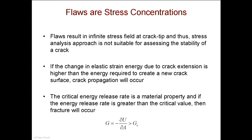That loss in strain energy is called the energy release rate. The energy release rate G is the change in strain energy due to increased crack area. If G is greater than the critical value Gc — a material parameter measured in a test — the crack will propagate. If G is less than the critical energy release rate, the crack will be stable and will not propagate.